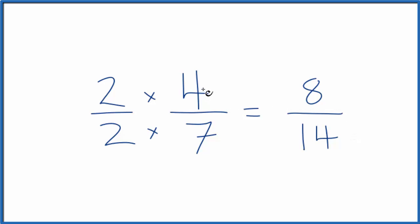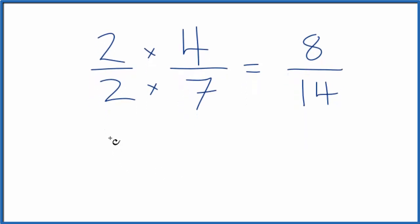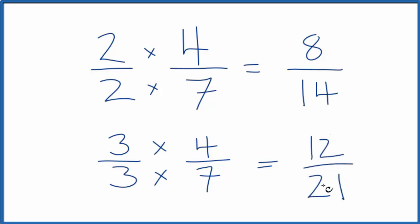If you divide four by seven and eight by fourteen, you'll get the same number. Let's do another one — how about three over three? Again, we're multiplying by one, because three divided by three is one, so we're not changing the value. We get three times four is twelve, three times seven is twenty-one. Twelve over twenty-one is another equivalent fraction for four-sevenths.